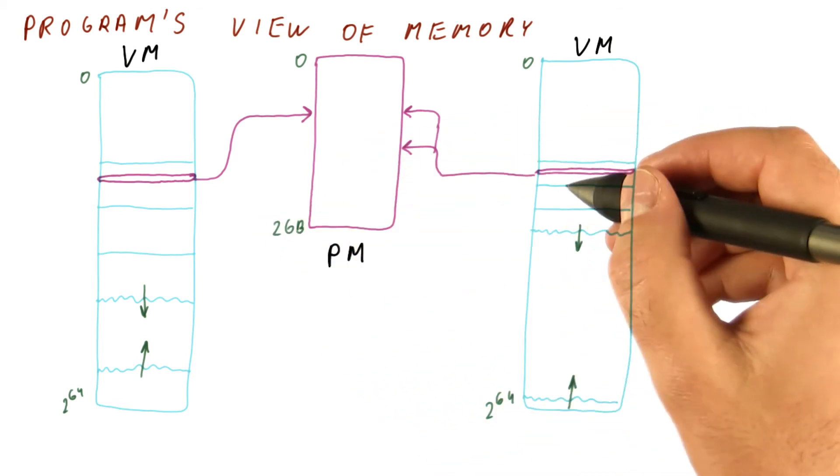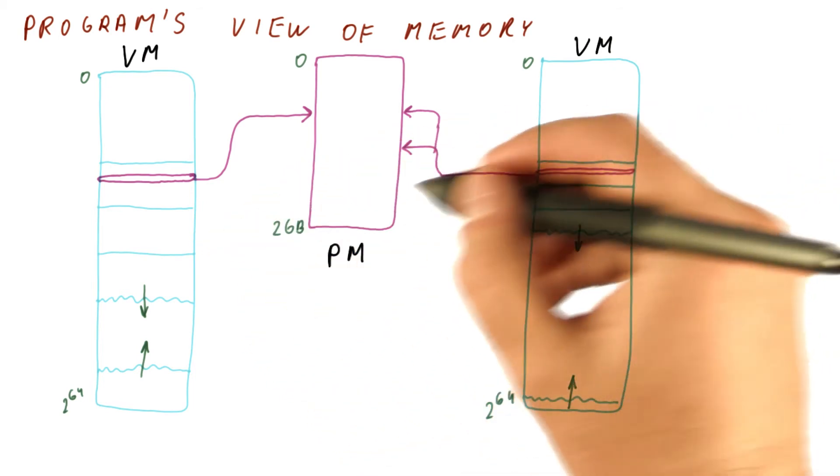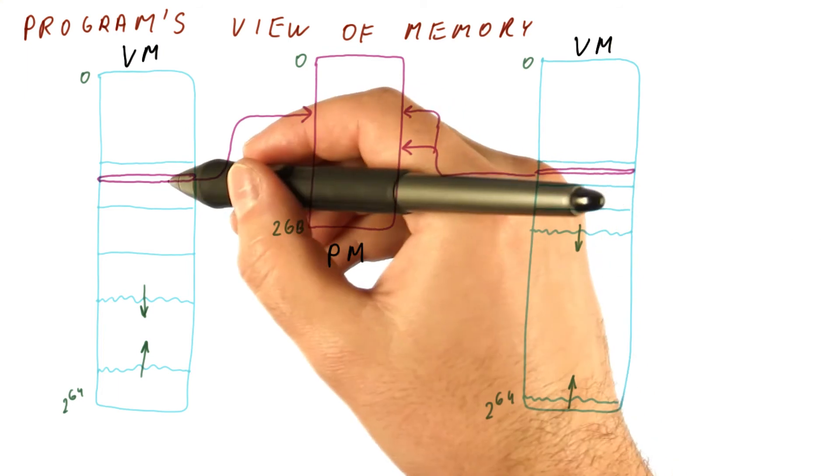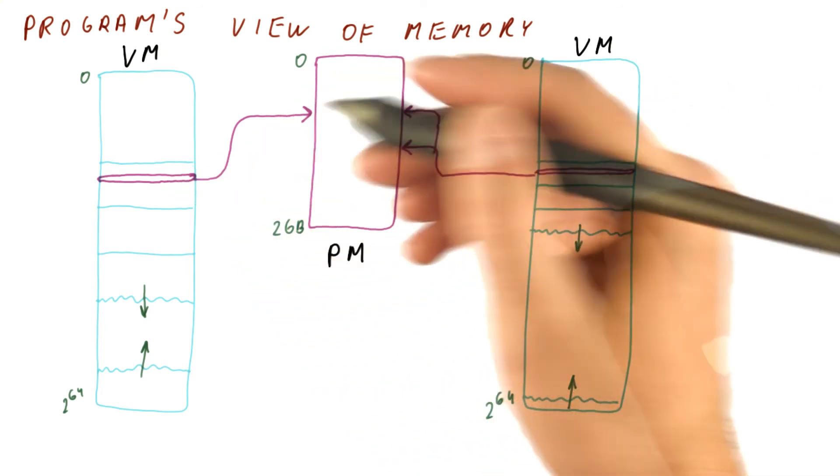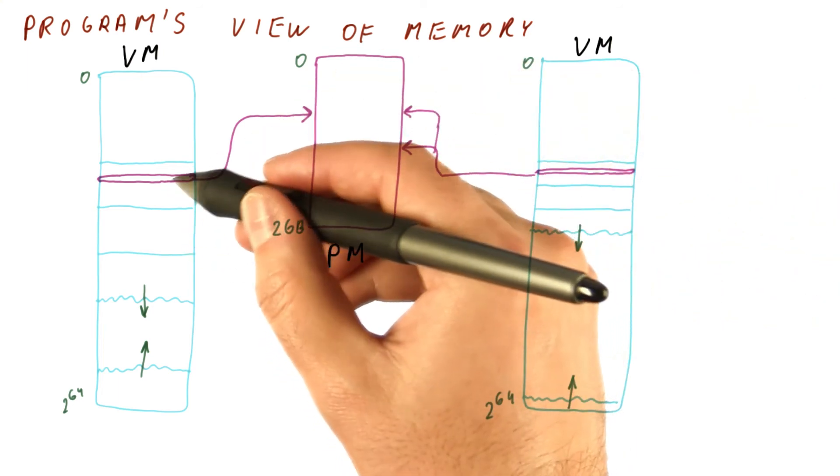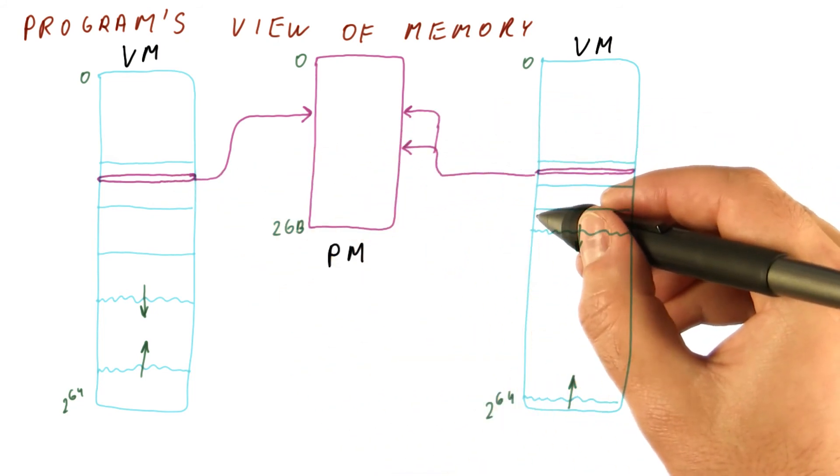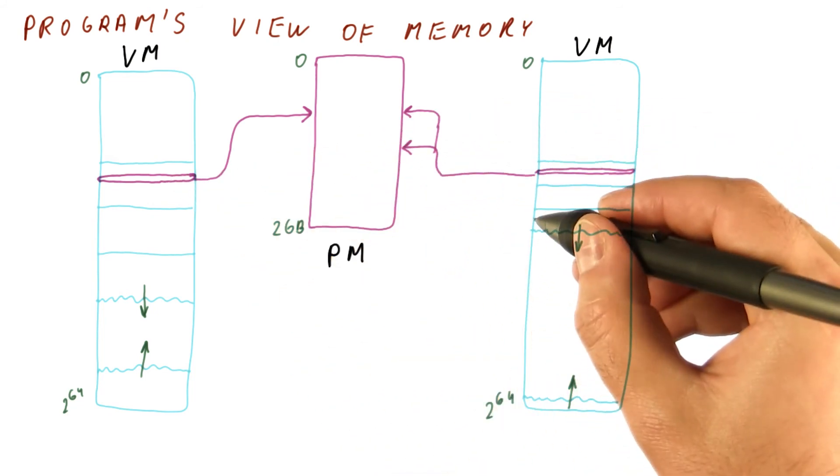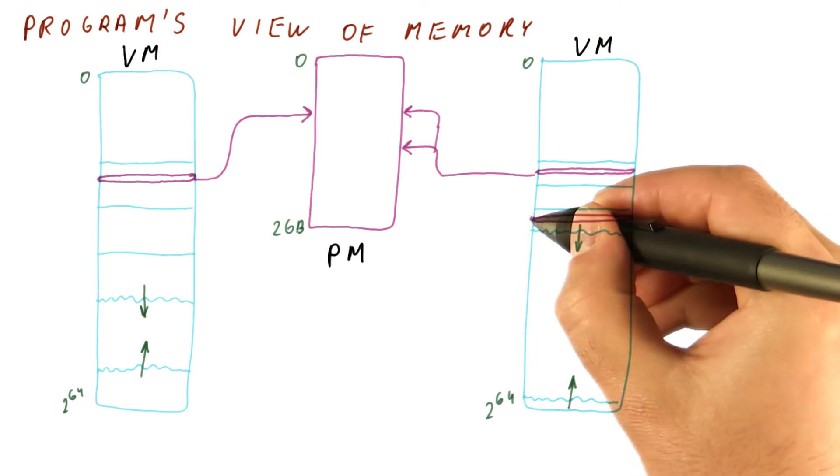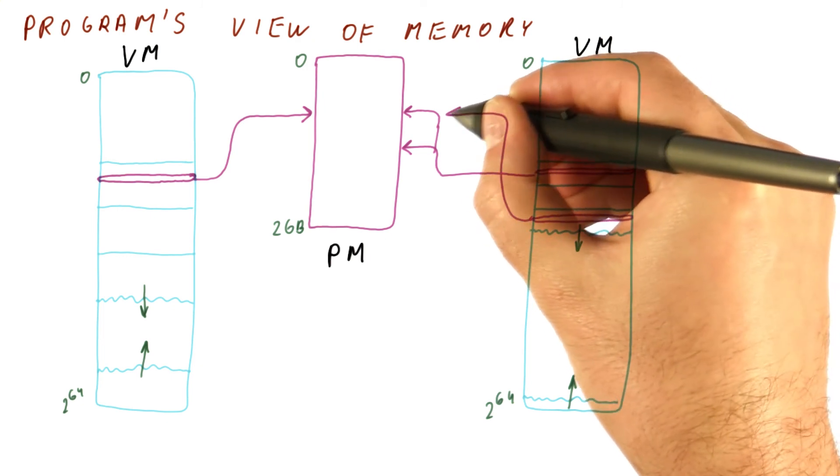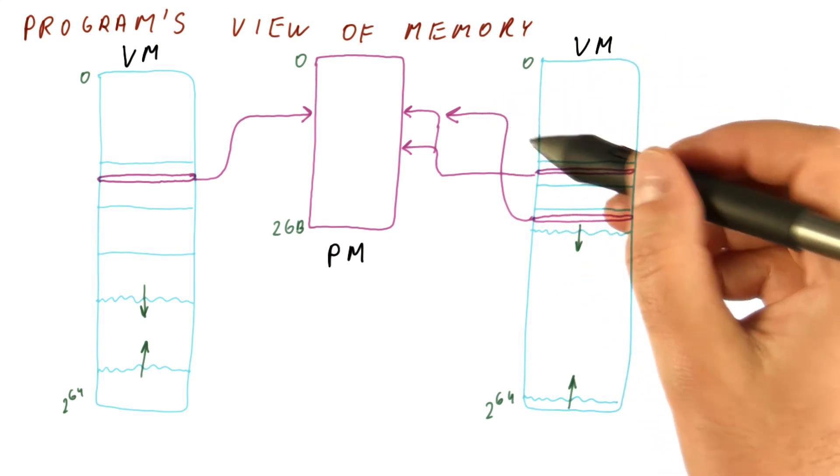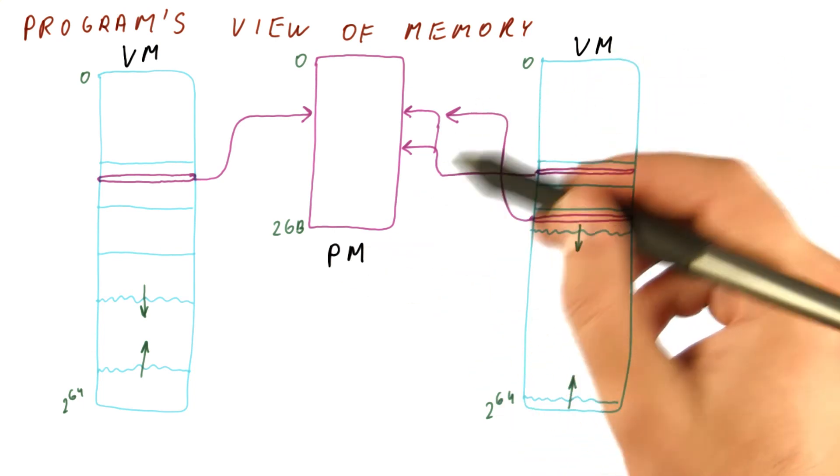In fact, data sharing among programs is not constrained so that you have to put the data in the same virtual address. You could easily allocate this here and then let this program share it. But as far as this program is concerned, it's here. It still needs to map to the same location. So how do we reconcile these different possibilities?